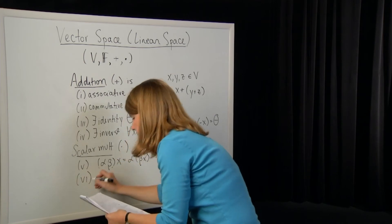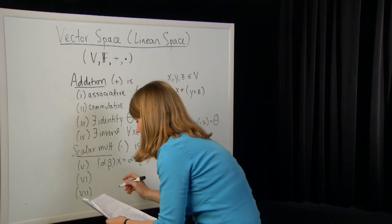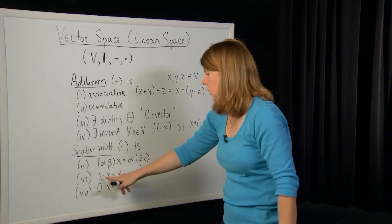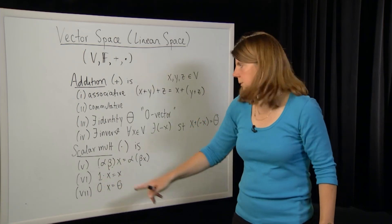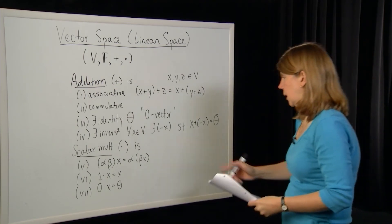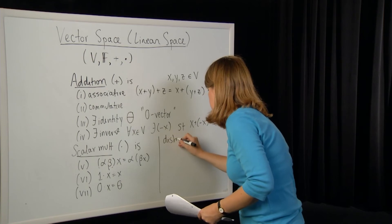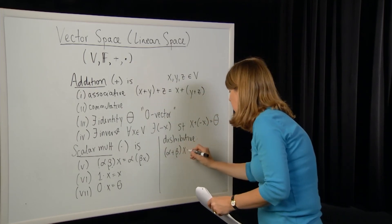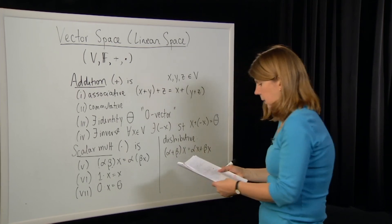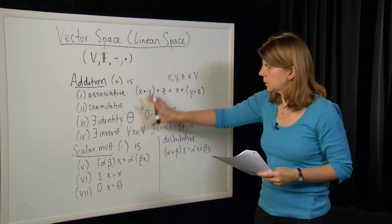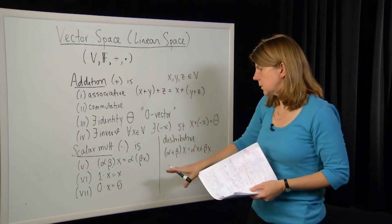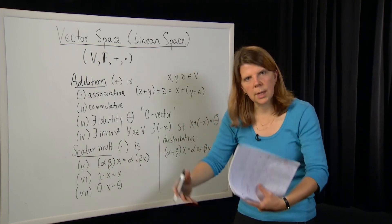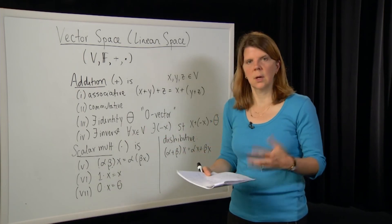We also have identity and inverse elements: 1 times x equals x, and 0 times x equals the zero vector — where 1 and 0 are the identity elements from the field F. Finally, we have the distributive laws: (alpha plus beta) times x equals alpha-x plus beta-x, and vice versa. Essentially, all these properties say the vector space is closed under vector addition and scalar multiplication — meaning performing those operations on elements of the space gives back something in the same space.